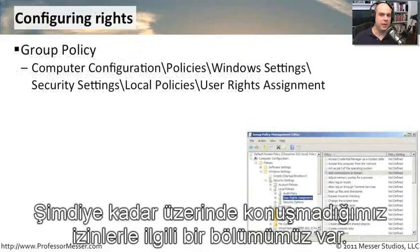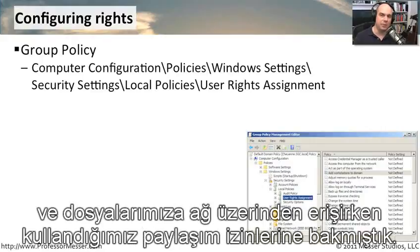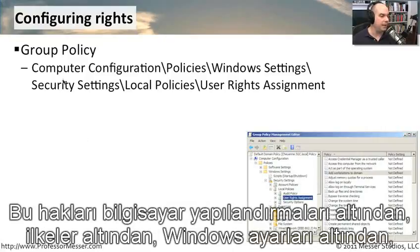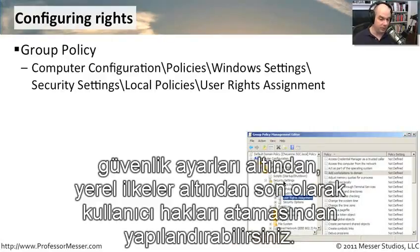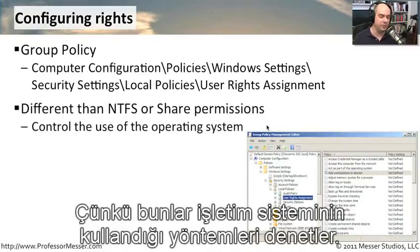There's a section of permissions that we really haven't talked about so far. We have looked at NTFS file partitions and in previous videos at share permissions when you access files across the network. But there's a section of permissions that really goes beyond files and folders in your operating system. You would configure these rights in the group policy settings under computer configuration, under policies, Windows settings, security settings, local policies, and finally user rights assignment. These user rights are pretty interesting.